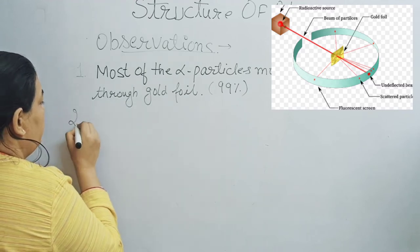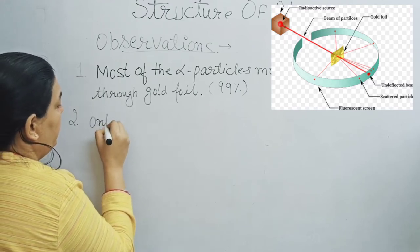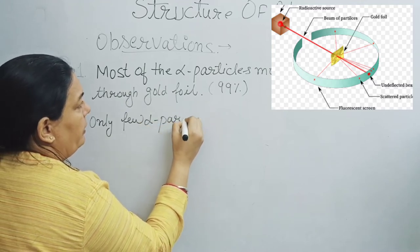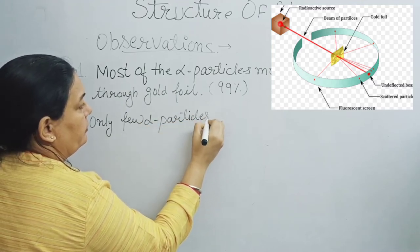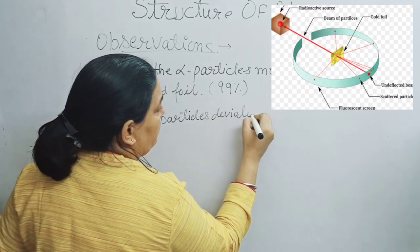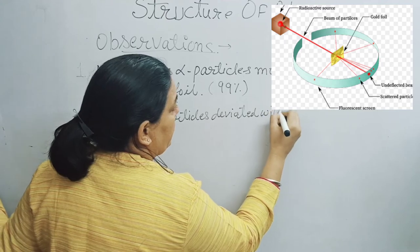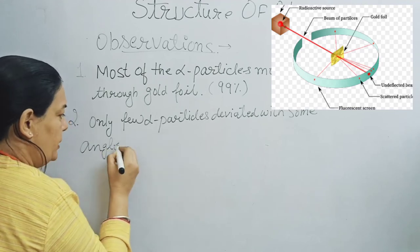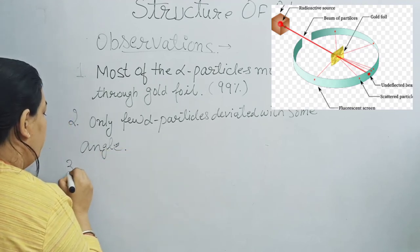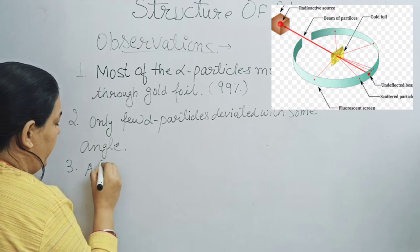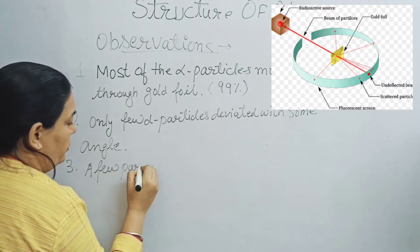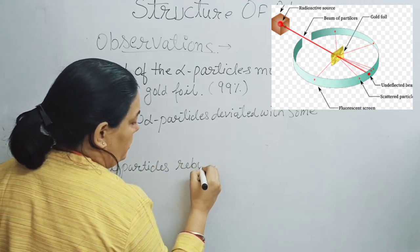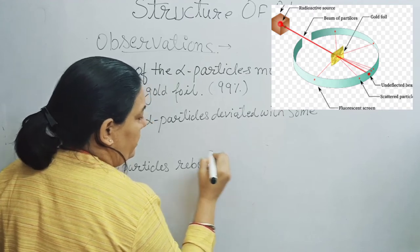The second observation is that only a few alpha particles deviated with some angle — their path changed slightly. The third observation is that a very few alpha particles rebounded after hitting the gold foil — they went back in the direction they came from.